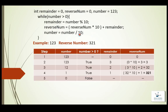In the next step, number equals number divided by 10 — we had number 12, so 12 divided by 10 gives us 1. So number will be assigned 1. 1 is greater than 0 — true. Remainder equals number mod 10: 1 mod 10 gives us 1, so remainder is 1. We had reverse number 32 from the previous step, so 32 multiplied by 10 becomes 320, plus remainder 1.